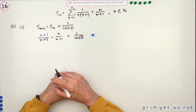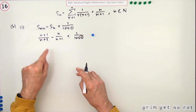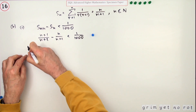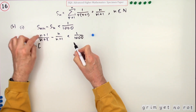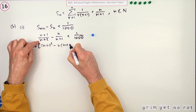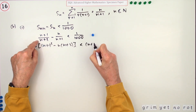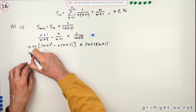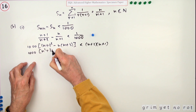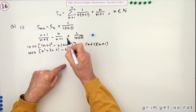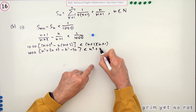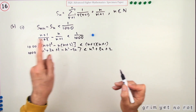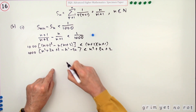Setting up that expression gets a mark. To tidy it up, multiply everything by the three denominators — putting the 1000 at the front — giving 1000[(n+1)² − n(n+2)] is less than (n+2)(n+1). Expanding: 1000[n² + 2n + 1 − n² − 2n] = 1000 × 1 = 1000, so the inequality becomes 1000 < n² + 3n + 2, or n² + 3n − 998 > 0.